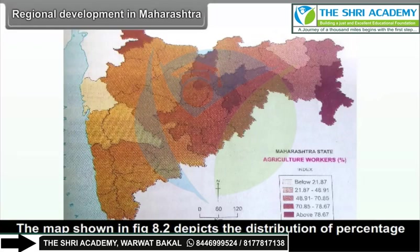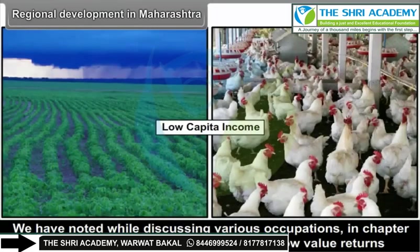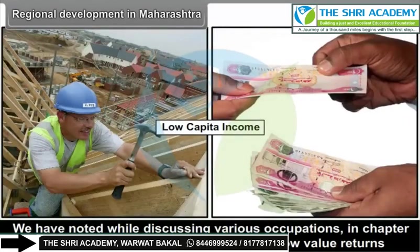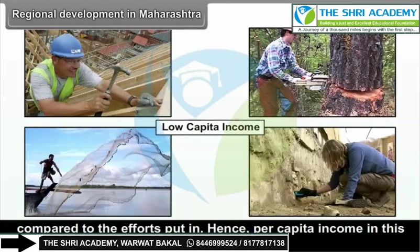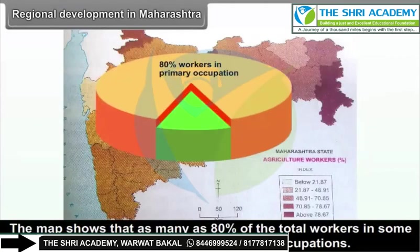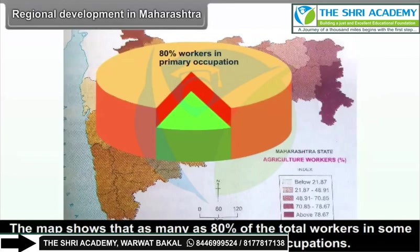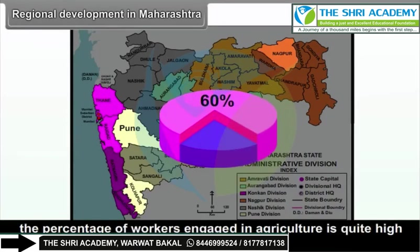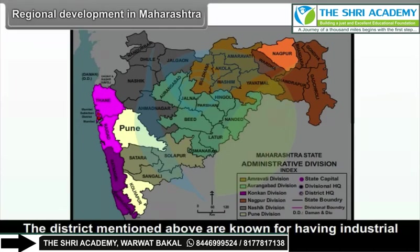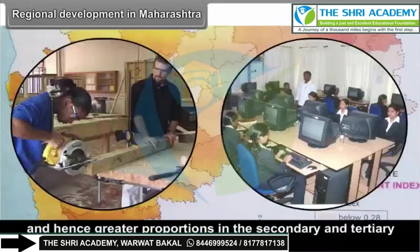The map shown in figure 8.2 depicts the distribution of percentage of workers engaged in agriculture. We have noted in Chapter 3 that primary occupations yield very low value returns compared to the efforts put in. Hence, per capita income in this sector is quite low. The map shows that as many as 80% of the total workers in some districts are engaged in primary occupations. Except for districts like Mumbai City and Suburban, Thane, Pune, Nagpur, Raigad, and Kolhapur, the percentage of workers engaged in agriculture is quite high — over 60%. The districts mentioned above are known for having an industrial base and high level of urbanization, and hence, greater proportions in secondary and tertiary occupations.